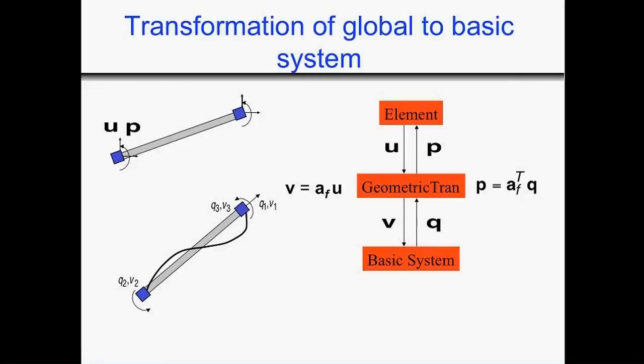Another reason for having element state determination defined in a basic system is the option to independently consider geometric non-linearity from element non-linearity, which comes from material non-linearity. In this way, you are solving two independent problems.